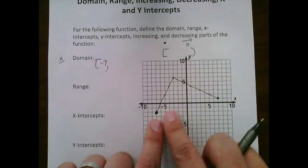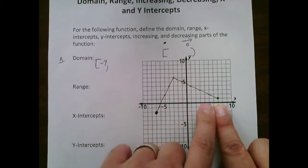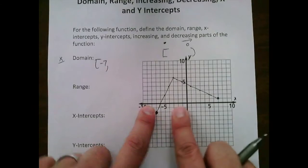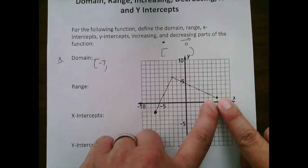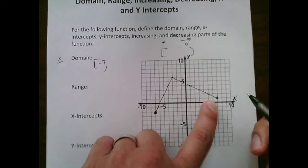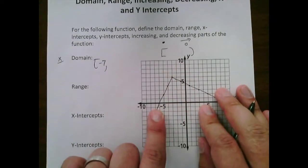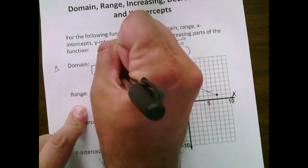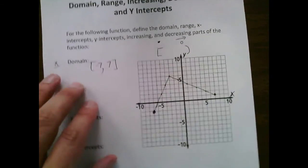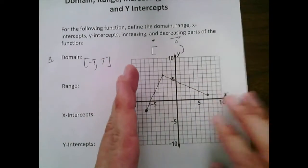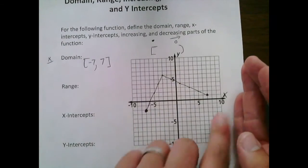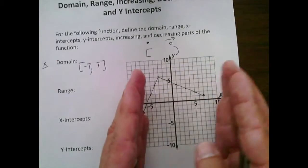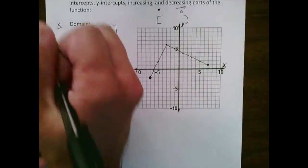Going to the right side, the rightmost point is when x is positive 7, and that is also a filled-in point, so we put a bracket there. Domain goes from leftmost to rightmost point — negative 7 to positive 7 — because we only care about the x-axis, which moves left and right.